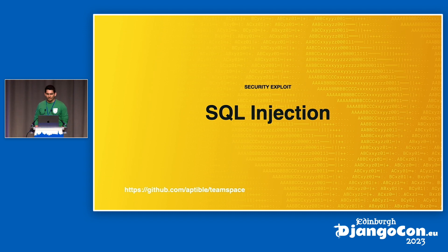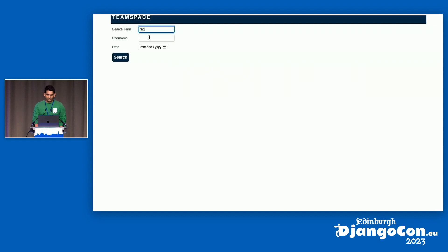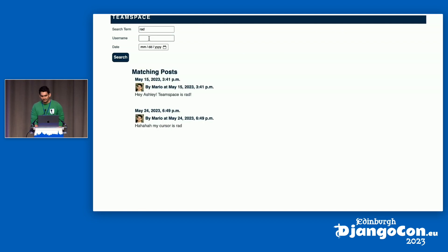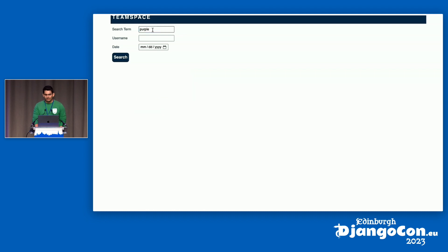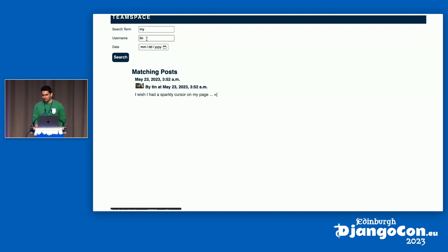To kick things off, I want to start with something most people have likely heard of but maybe haven't seen in action: SQL injection. Django's day-to-day ORM usage handles this out of the box, so you only really have to think about SQL injection when you start using nonstandard things like raw query sets. For TeamSpace, we wanted to add search, so we manually built the query string using string formatting and execute it as a raw query, which opens us up to SQL injection.